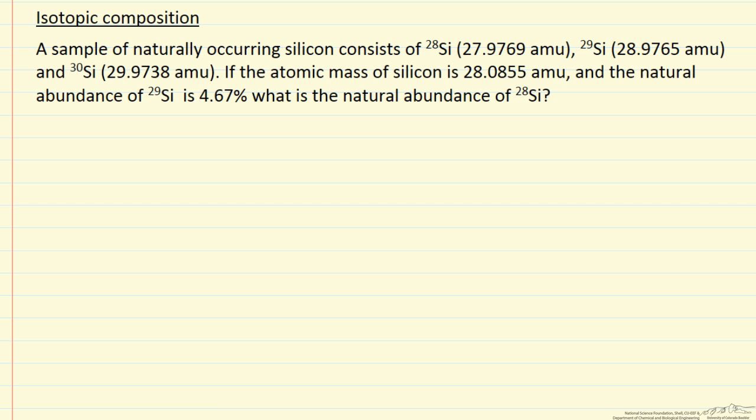In this problem, I have a mixture of three silicon isotopes with their exact atomic weights. This mixture has an average atomic mass of 28.0855 atomic mass units.